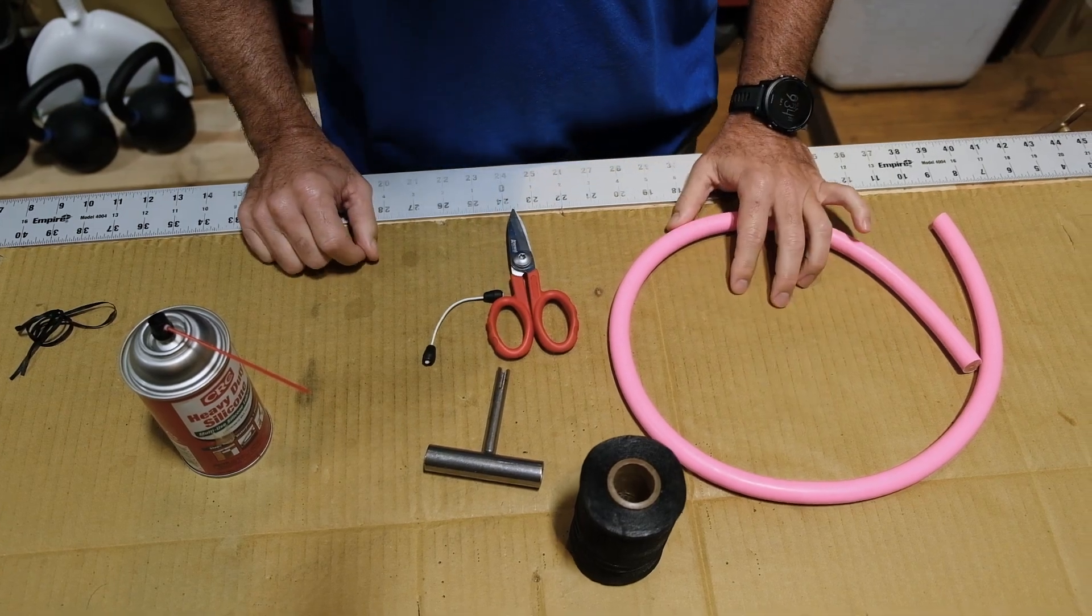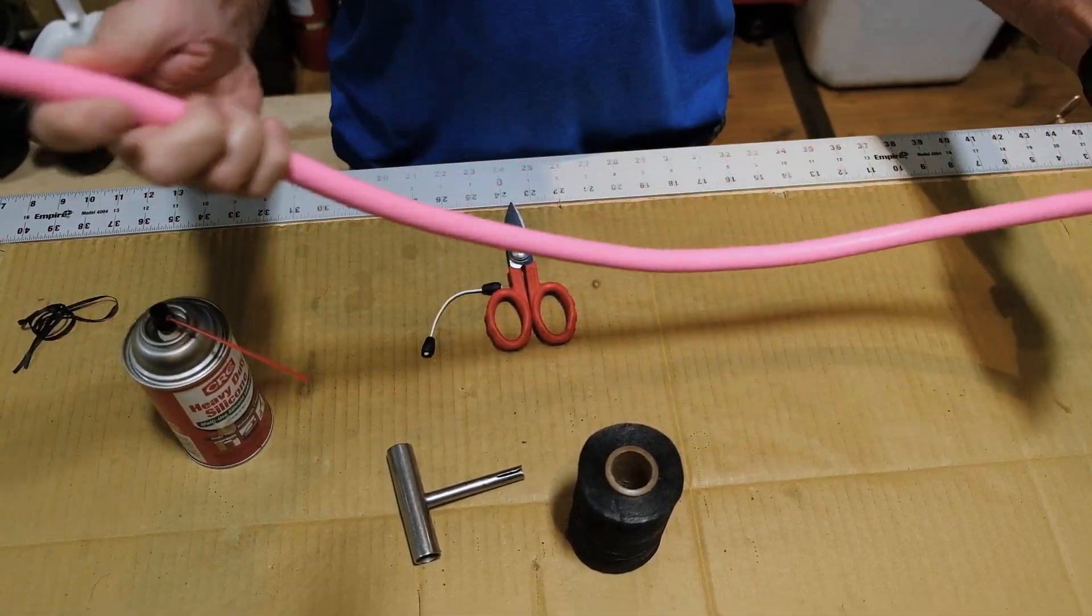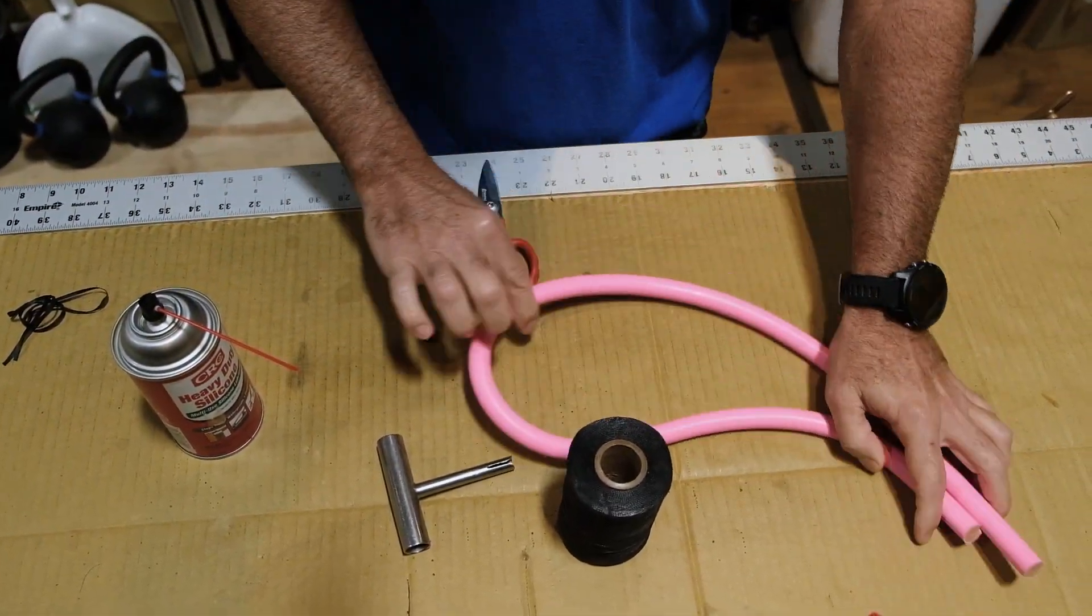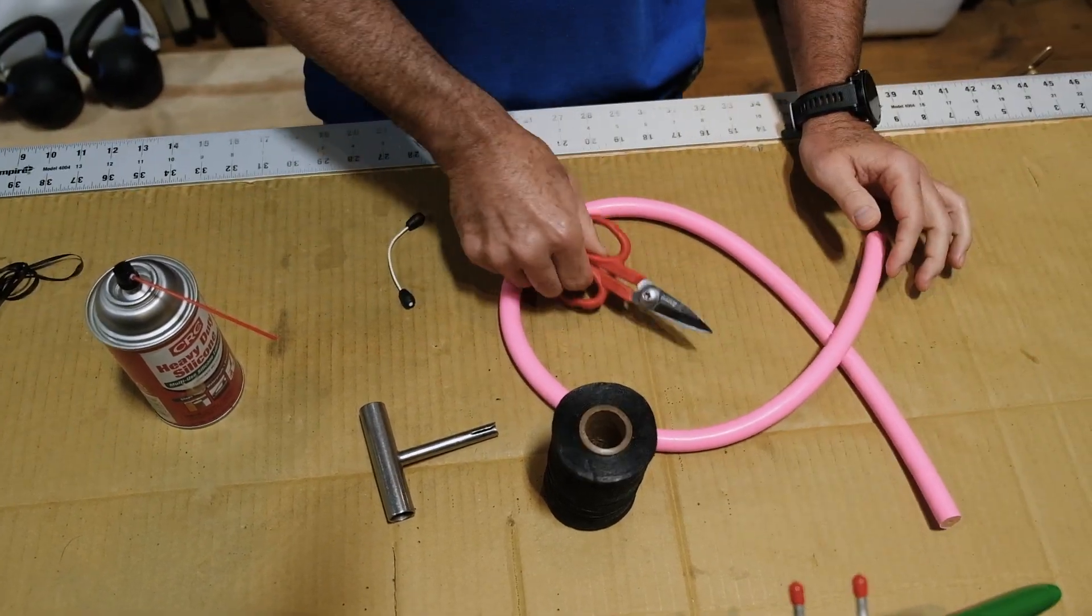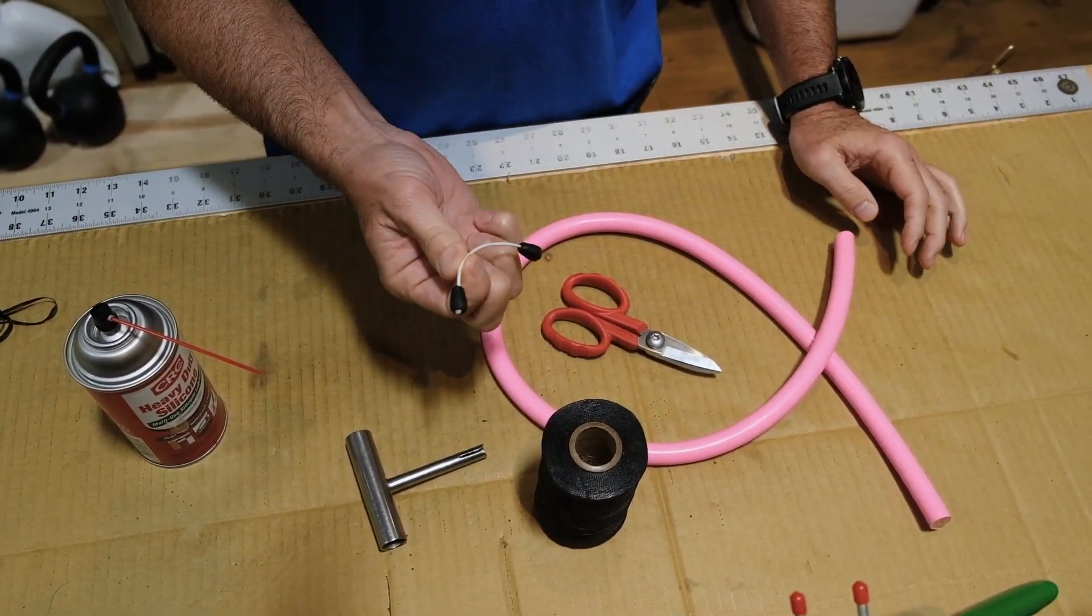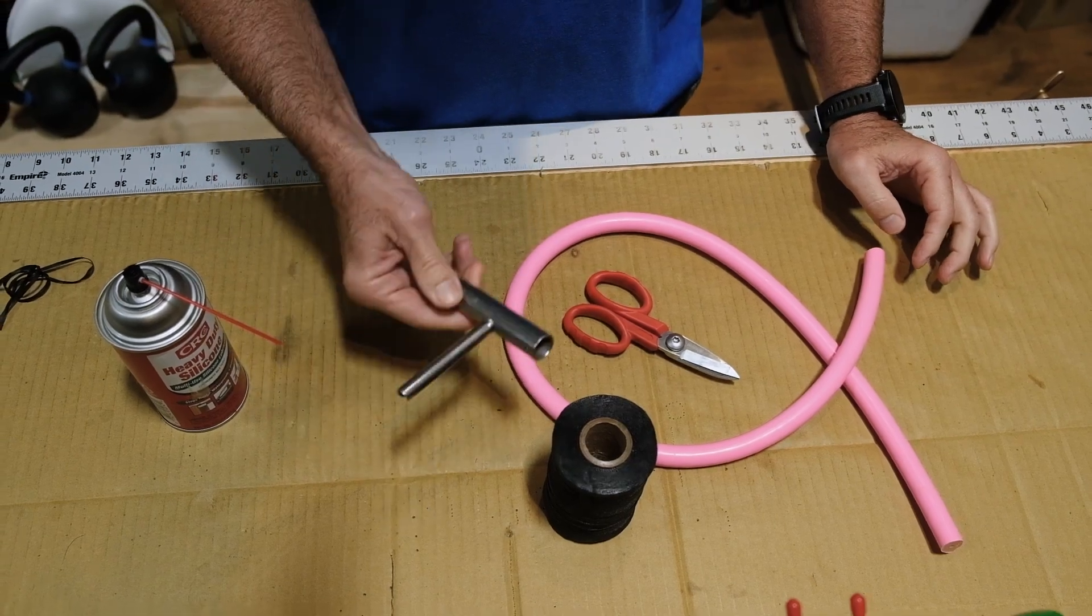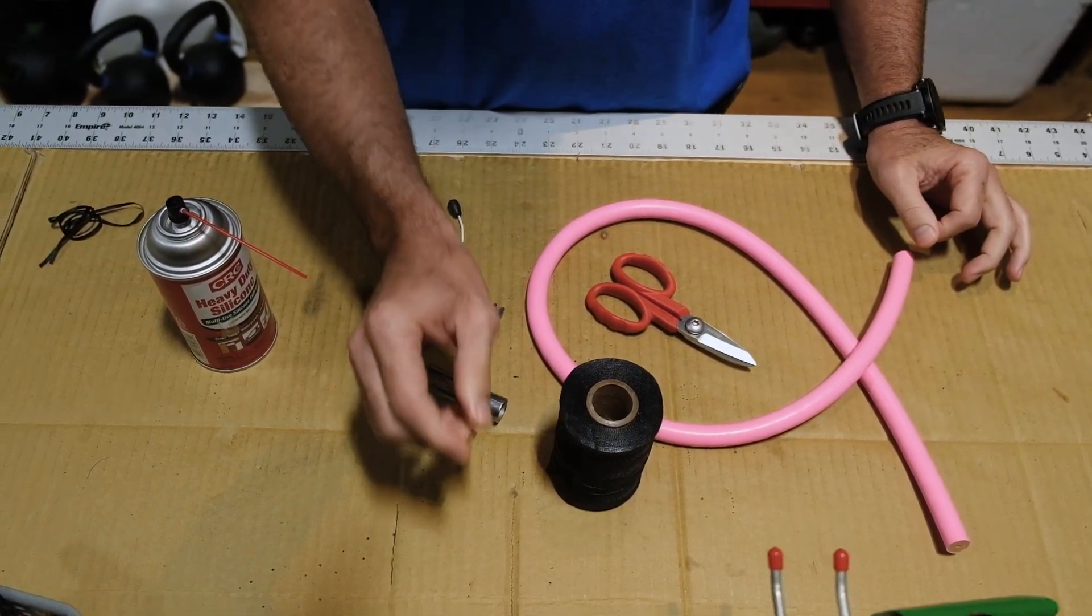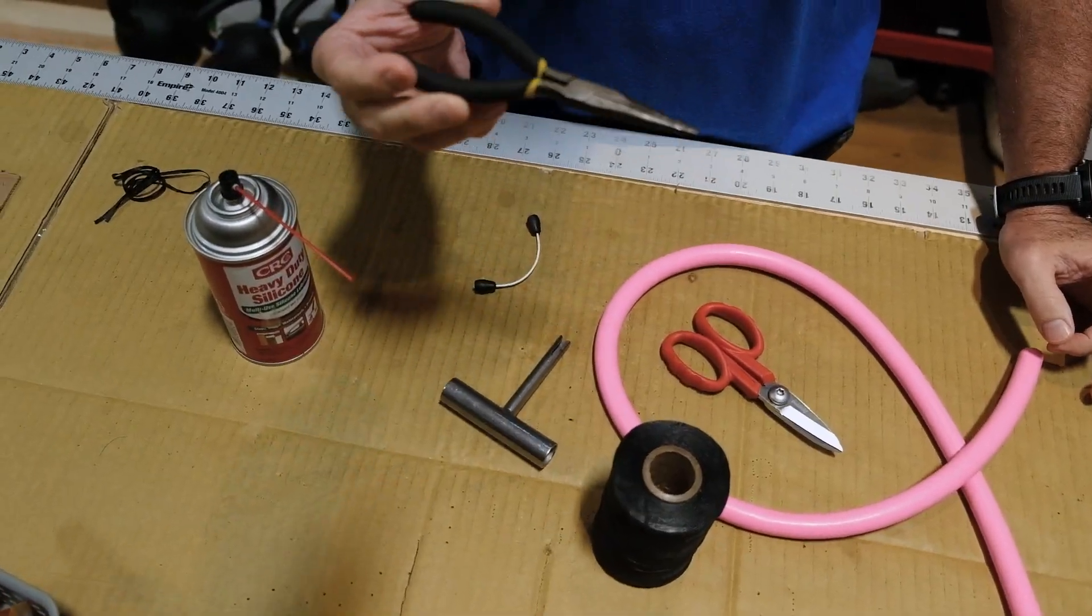Really, there's a few things that you would want. Obviously, your cut of speargun rubber, a pair of good scissors, the wishbone that you're going to use. We like to use a wishbone tool or you can use needle nose pliers.